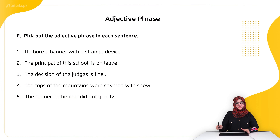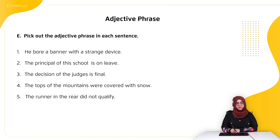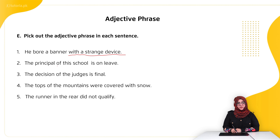Let's move on to the exercise: pick out the adjective phrases in each sentence. First: 'He bore a banner with a strange device' — the adjective phrase is 'with a strange device'. Second: 'The principal of the school is on leave' — a clue is that after 'of', we usually find an adjective phrase describing the noun, so 'of the school' is the adjective phrase.